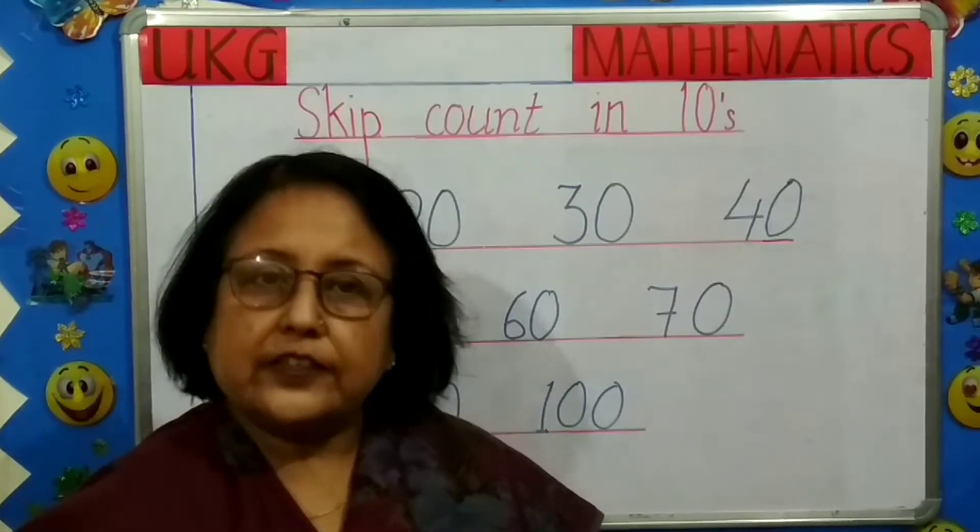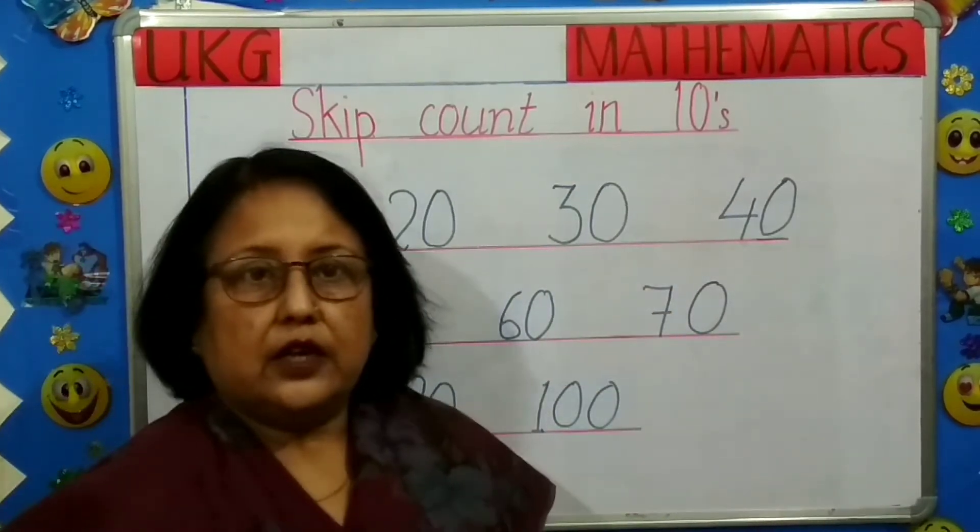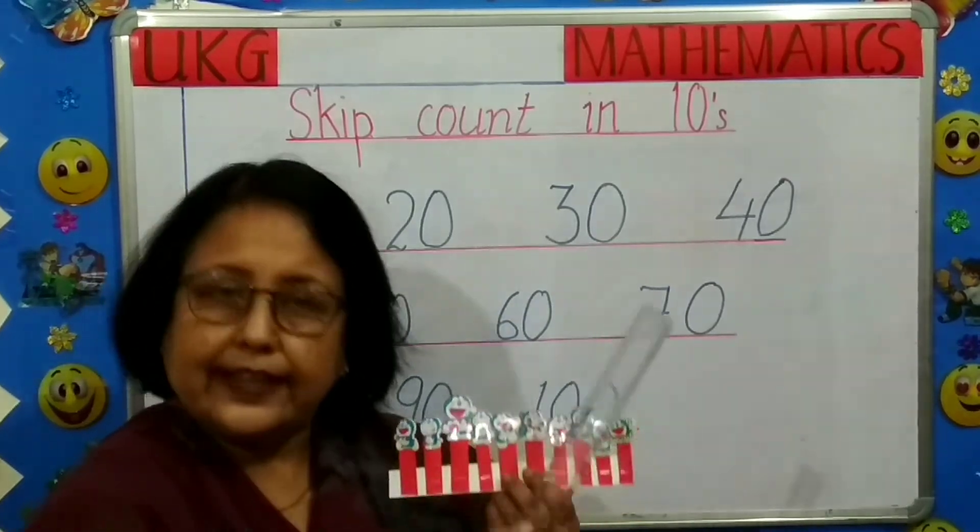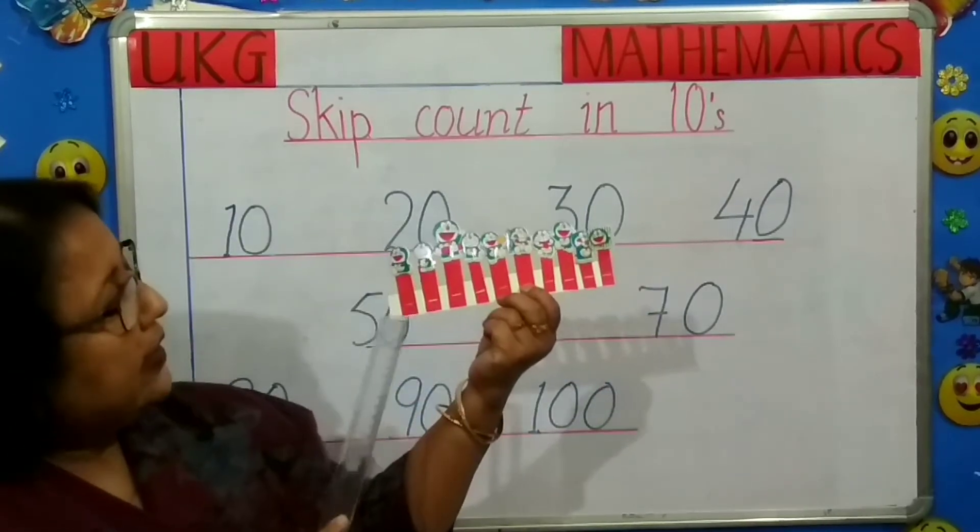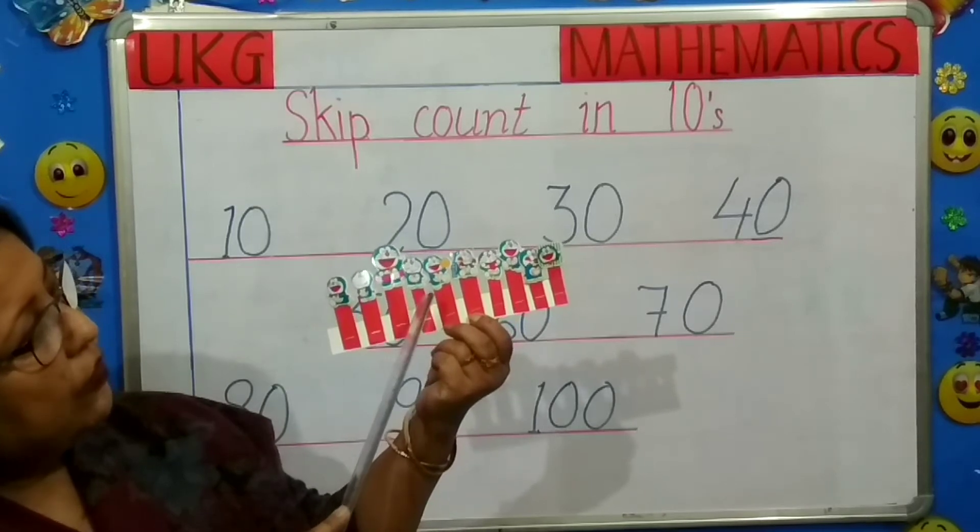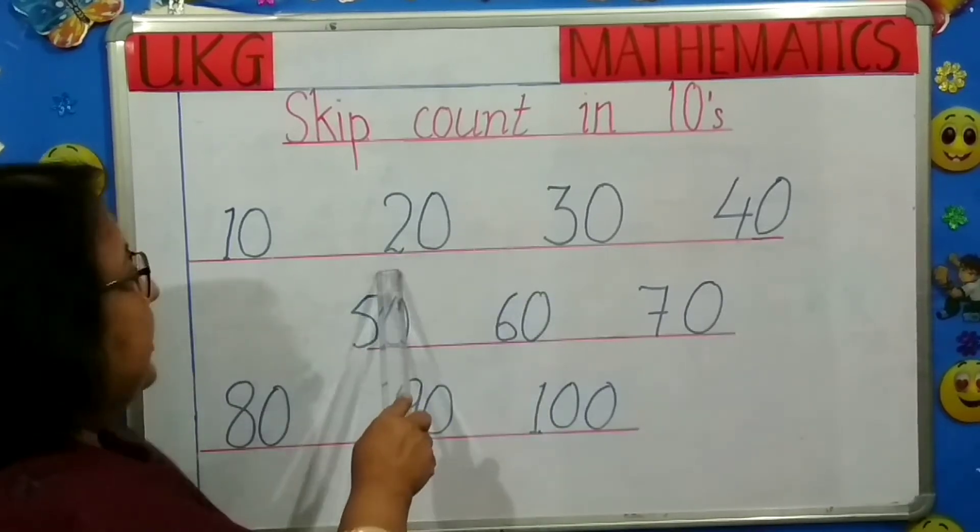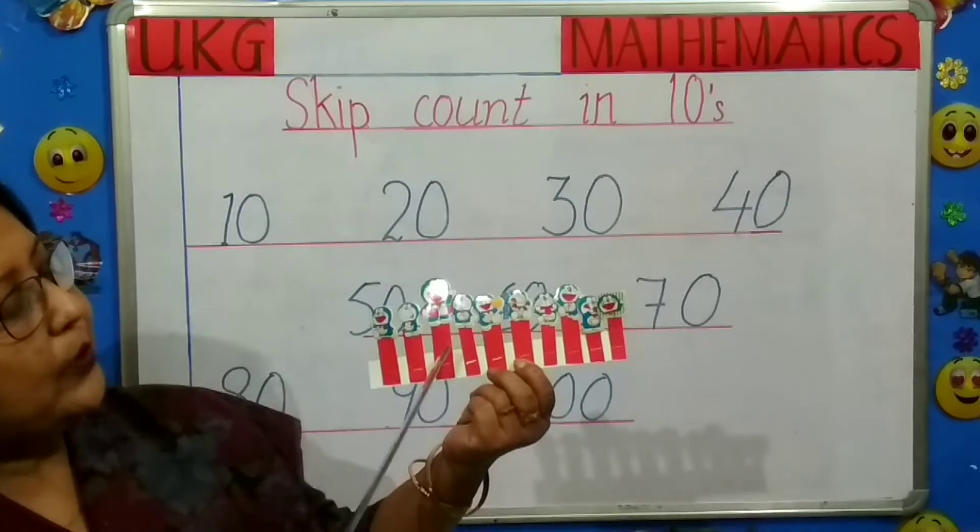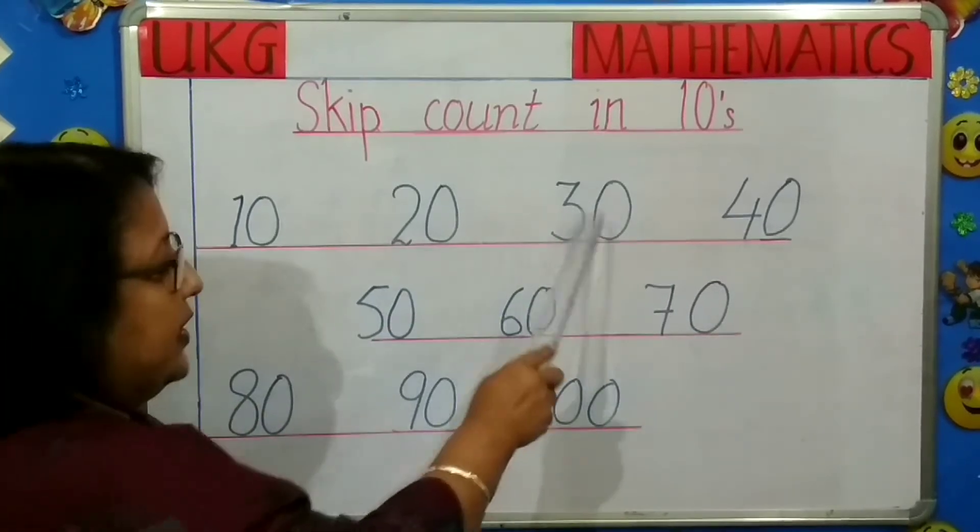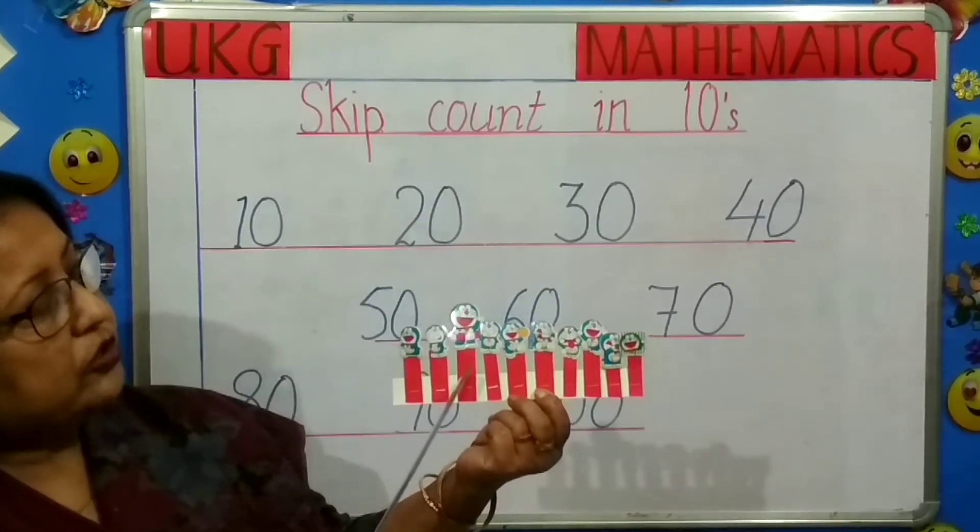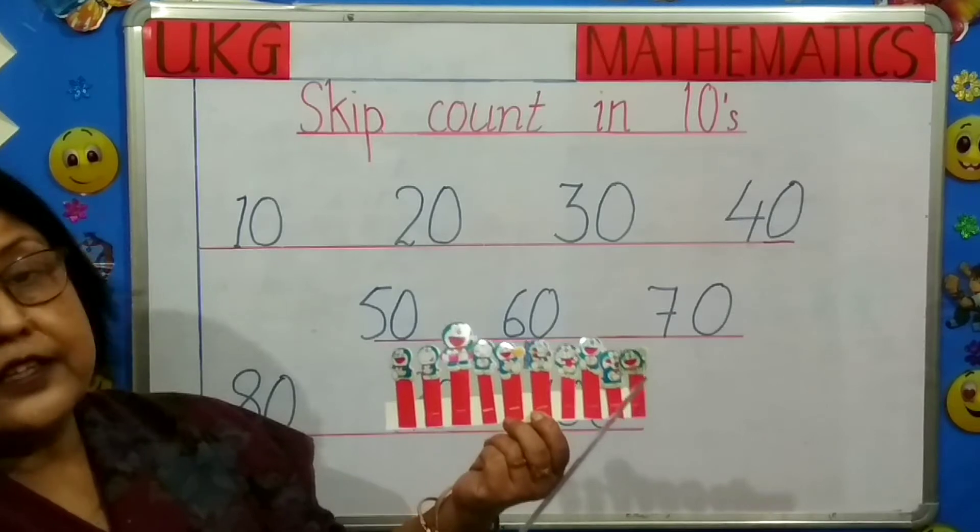So now moving on to the next topic, skip count in 10s. What do we do here? We count the first 5 numbers and the 10th number we write. For example, 10, 11, 12, 30, 40, 50, 60, 70, 80, 90, 20. Next, 21, 22, 23, 24, 25, 26, 27, 28, 29, 30. Next, 31, 32, 33, 34, 35, 36, 37, 38, 39, 40.